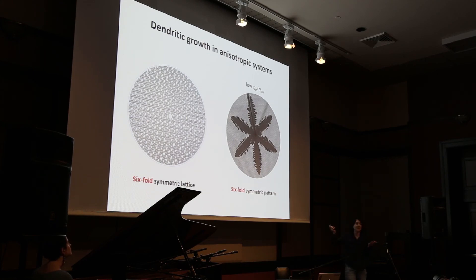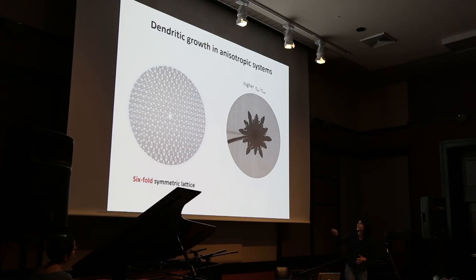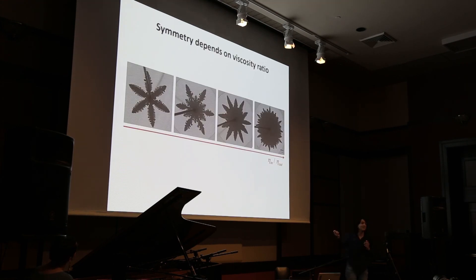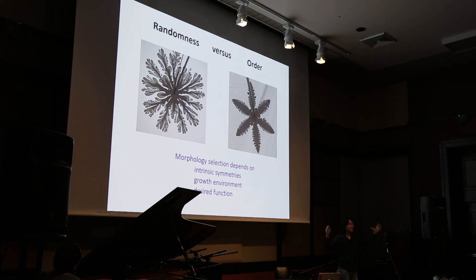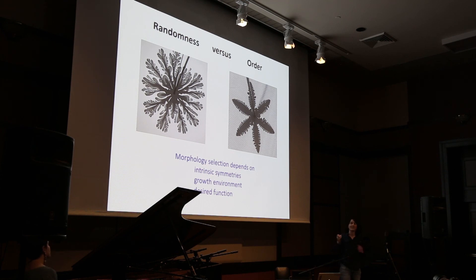We've seen how important the viscosity ratio is. So what happens at a higher viscosity ratio? We still have a six-fold symmetric pattern, but now we get 12 branches — a change in symmetry occurring again with the same control parameter. The viscosity ratio changes the pattern from six-fold symmetry to six long branches, six short branches, 12 long branches, and eventually even higher symmetries. With this very simple system, we can learn about both random branching patterns and ordered dendritic patterns. We learn that morphology — the selection of a growth morphology — essentially depends on intrinsic symmetries of the system, depends on the growth environment, and governs the desired function of a pattern.